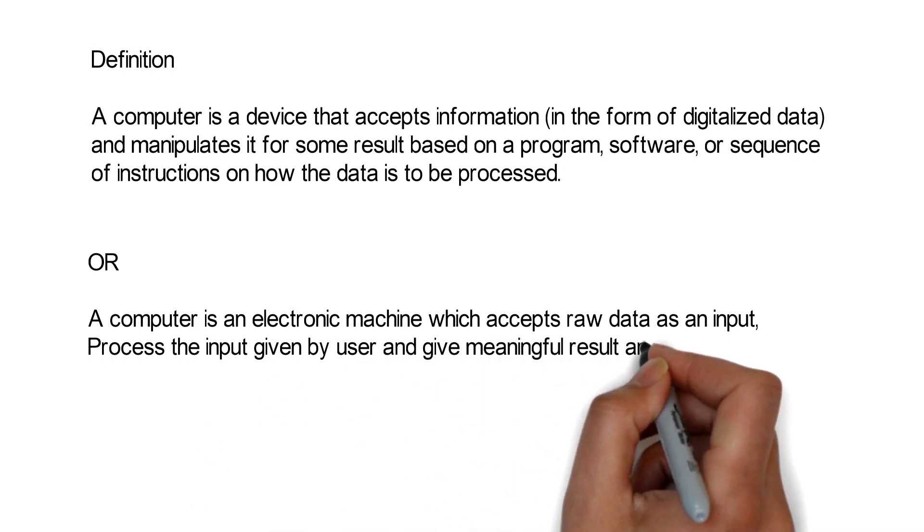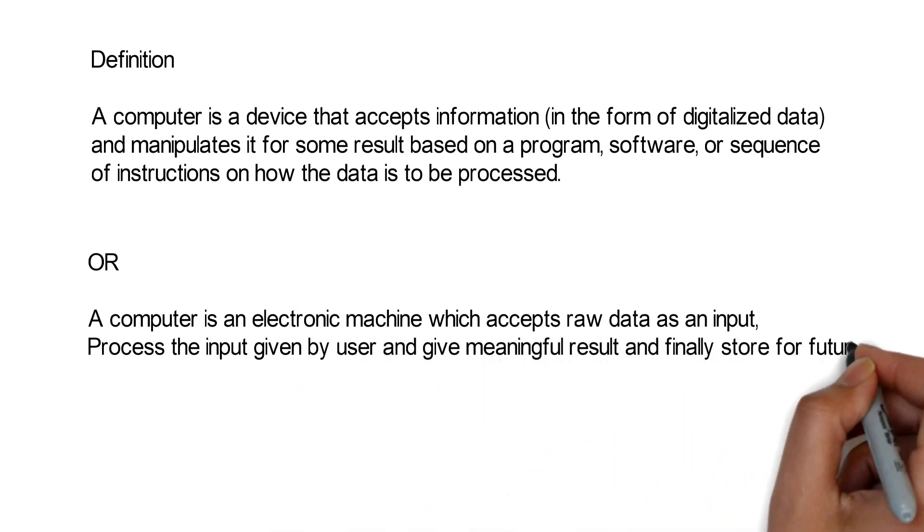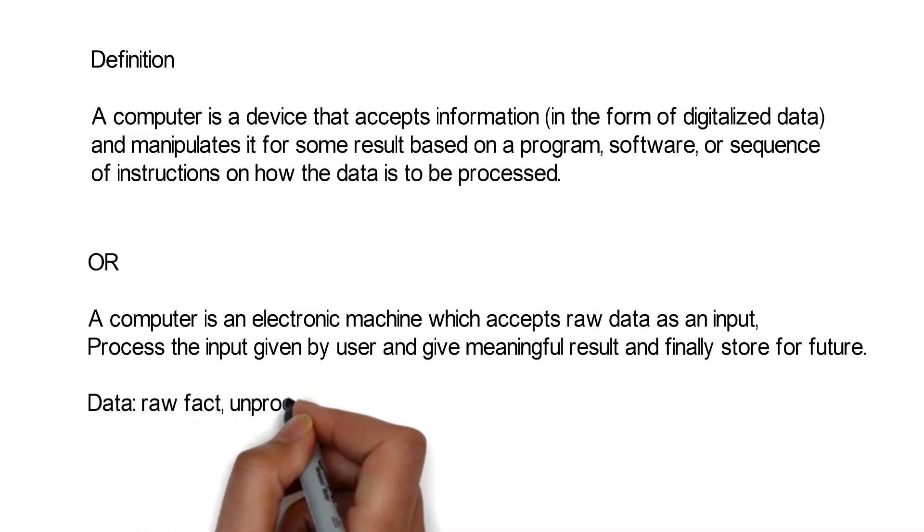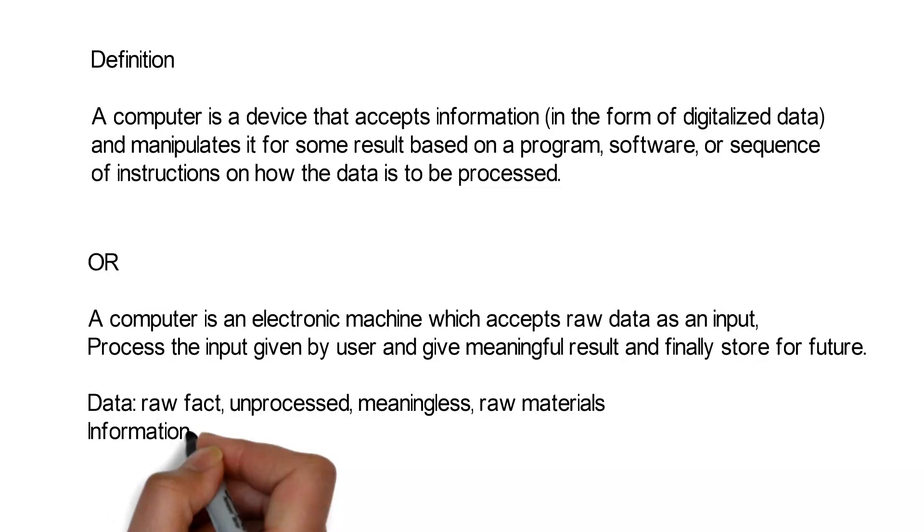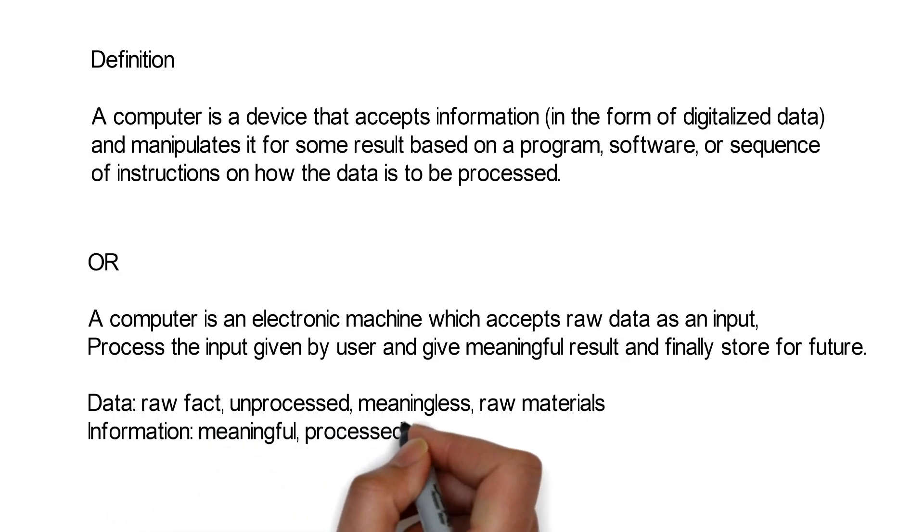Data is raw facts, unprocessed and meaningless raw materials. Information is meaningful, processed output result.